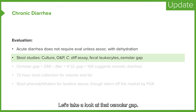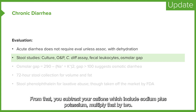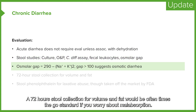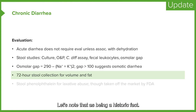Let's take a look at the osmolar gap. The equation is 290 — which is approximately your plasma osmolarity — minus 2 times your cations, which include sodium plus potassium. A 72-hour stool collection for volume and fat would be, oftentimes, the gold standard if you're worried about malabsorption. Stool phenolphthalein for laxative abuse, though taken off the market by the FDA — just know that as a historic fact.